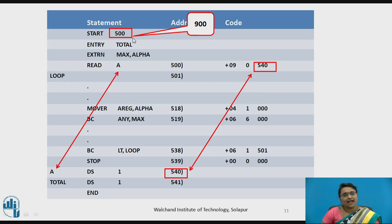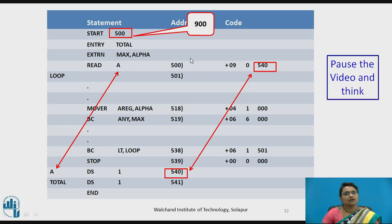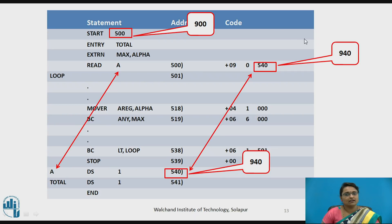Now, if the address changes during linking such that the linked origin becomes 900 instead of 500, what happens to the other addresses? Since the original translated origin was 500 and symbol 'a' was at 540, if the linked origin is now 900, then the linked address for 'a' becomes 940. All addresses change accordingly, so the value used in the instruction is no longer 540 but 940.